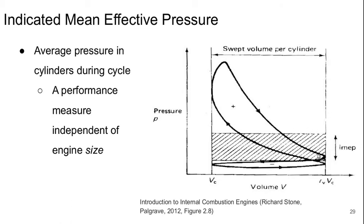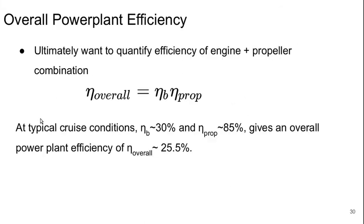To calculate this, you essentially integrate the pressure versus volume curve and then divide by the delta volume from max to min. That gives you the indicated mean effective pressure.